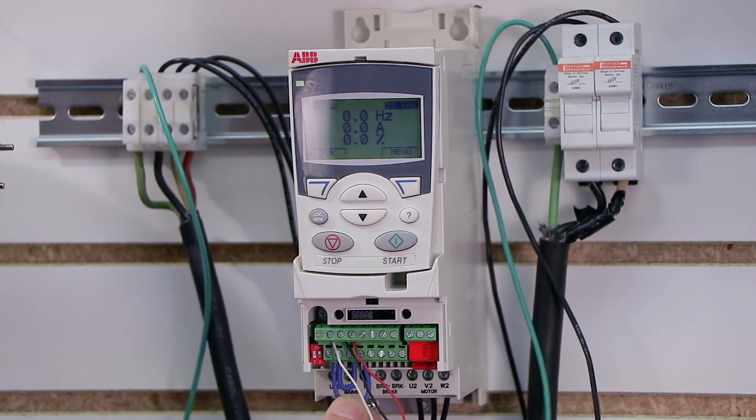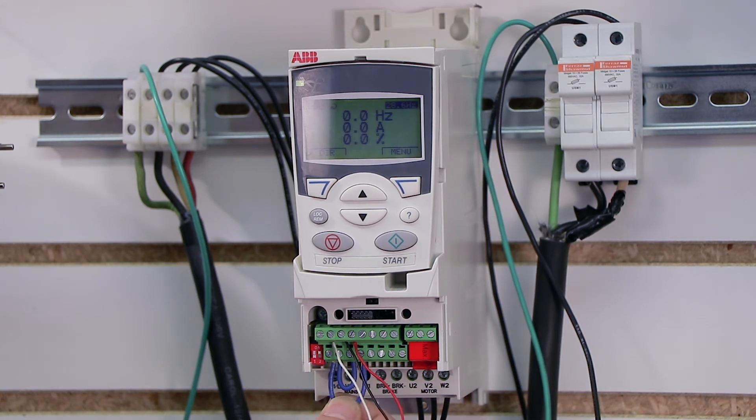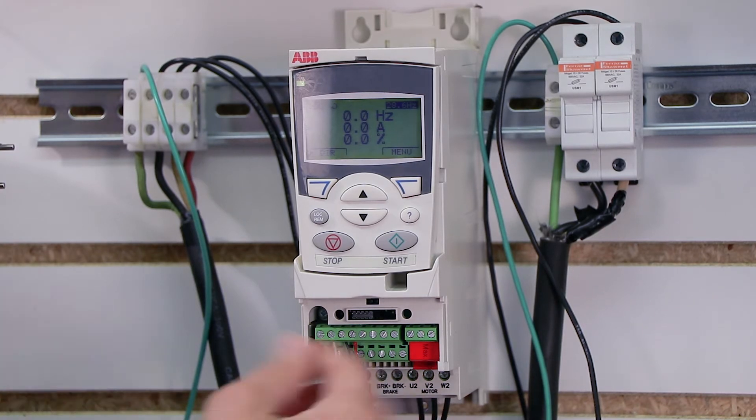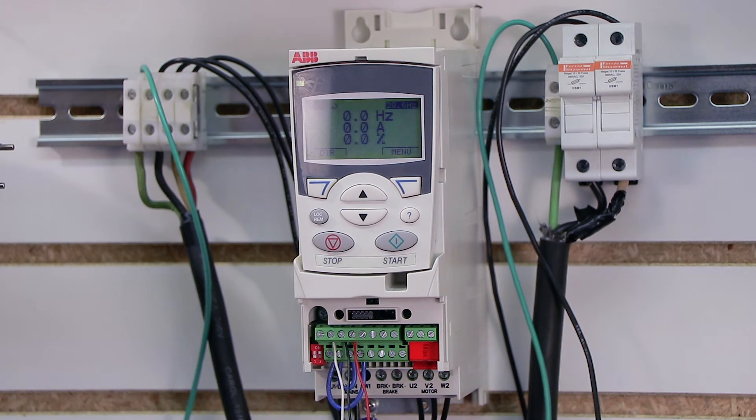Now this is the jumper we're going to replace with an external push button in the next video to start the drive from an actual push button instead of a jumper. But for the sake of this video, like I said, we're just jumpering our start command so that we can start the drive with the terminal strip and then run it off the speed pot.